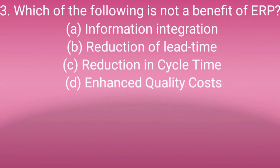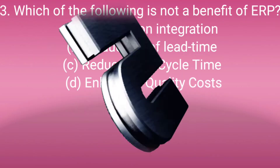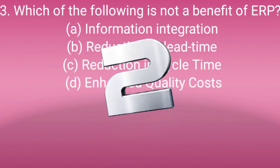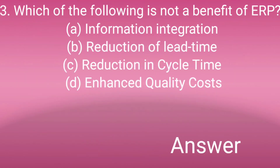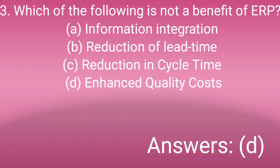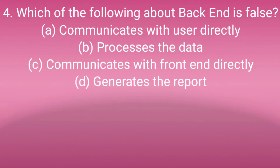Question number three: Which of the following is not a benefit of ERP? Option A: Information integration, Option B: Reduction of late time, Option C: Reduction in cycle time, Option D: Enhanced quality cost. The answer is D — Enhanced quality cost — which is not a benefit of ERP. Answer is D.